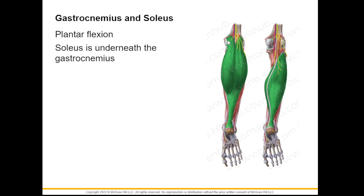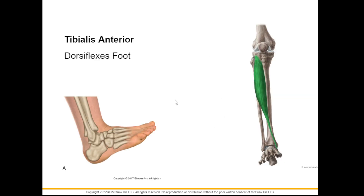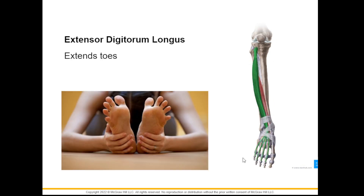At the posterior of the calf we have the gastrocnemius and soleus. Their job is for plantar flexion — plantar flexion means to tiptoe. When you tiptoe you notice that muscle on your calf going upwards: that's your gastrocnemius and soleus. The muscle that allows dorsiflexion — the opposite of plantar flexion, or heel walking — is your tibialis anterior. We also have muscles which allow us to extend our toes called the extensor digitorum longus.